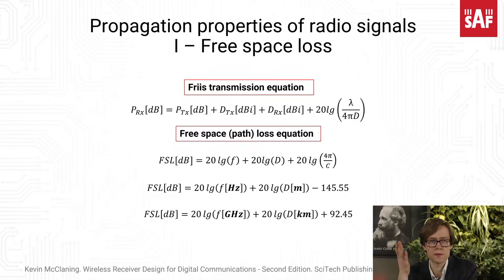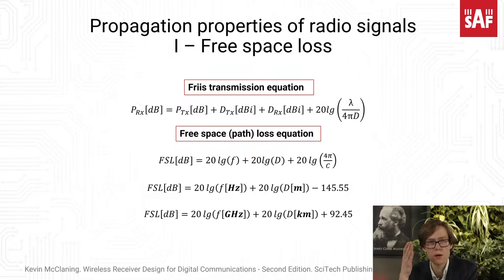This brings up an intriguing question: can the free space loss be negative? Because we have this negative constant, can it be that this component is larger than both the frequency and distance components, giving us a negative free space loss? I'm waiting for your suggestions. If it were negative, that would mean amplification — but how could a signal amplify while propagating? We just found out that it only attenuates and loses its power.